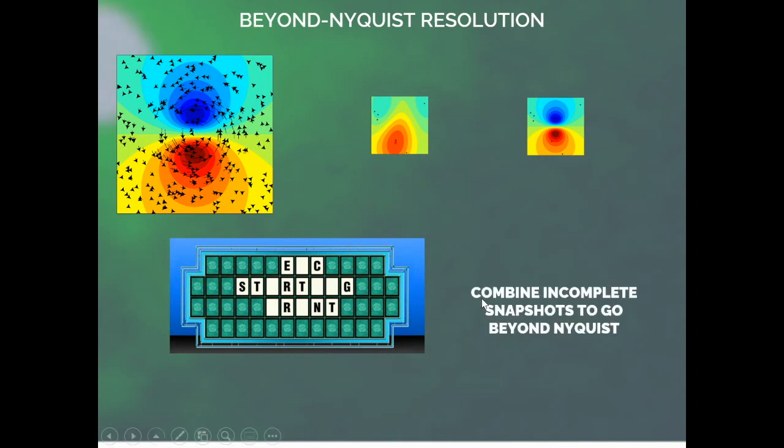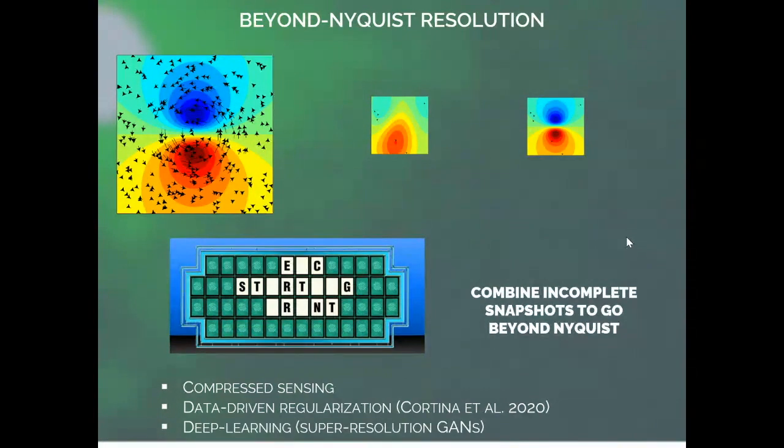So the idea is that we want to combine incomplete snapshots to go beyond the Nyquist limit of what we can sample, and that allows us to go much beyond the limits of the resolution that normally PIV has. We will exploit methods based on compressed sensing, on data-driven regularization. We already did something based on principal component analysis, and now we're already exploring deep learning tools that are offered by super-resolution generative adversarial neural networks.